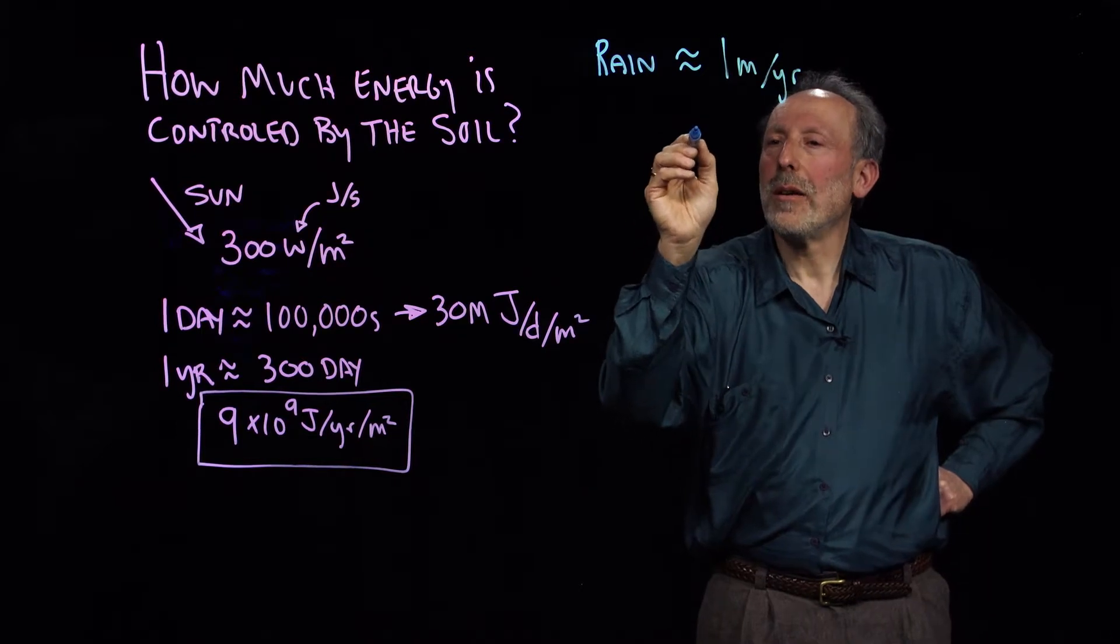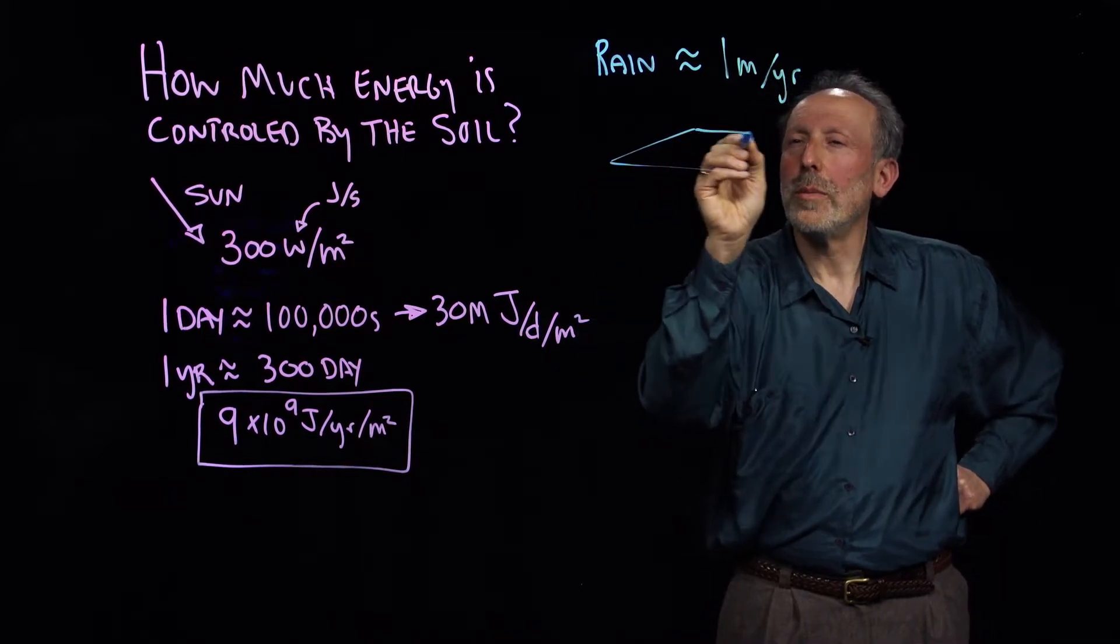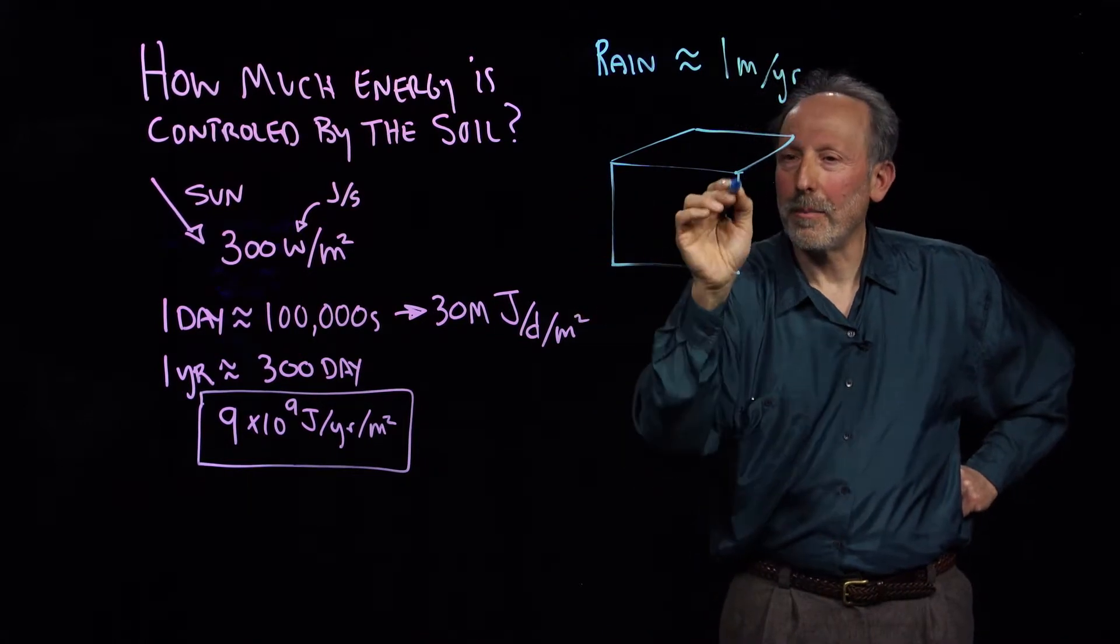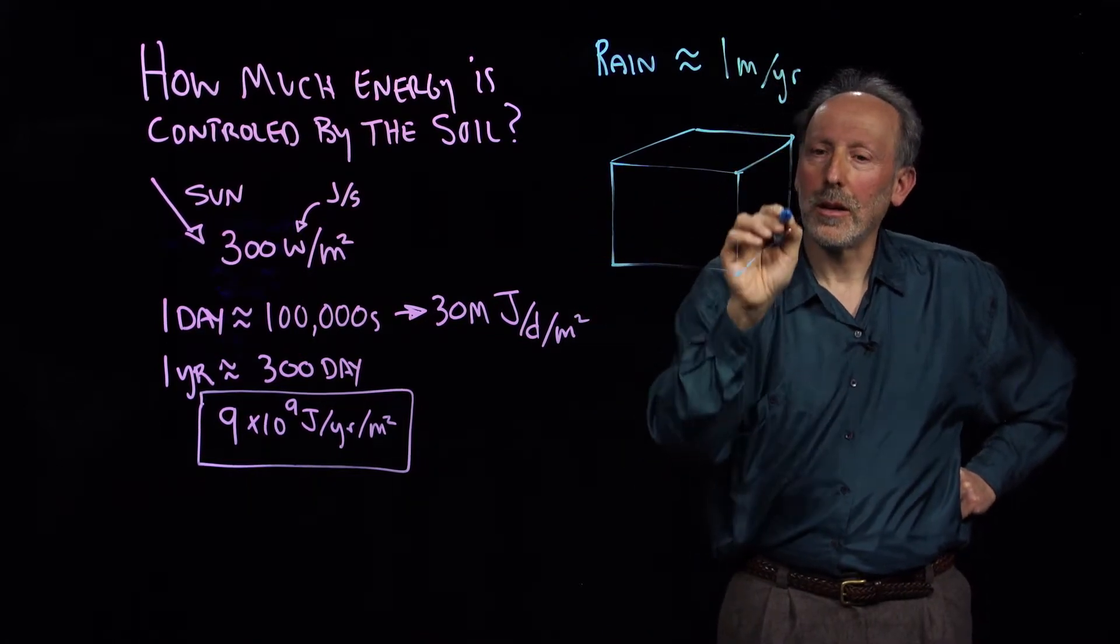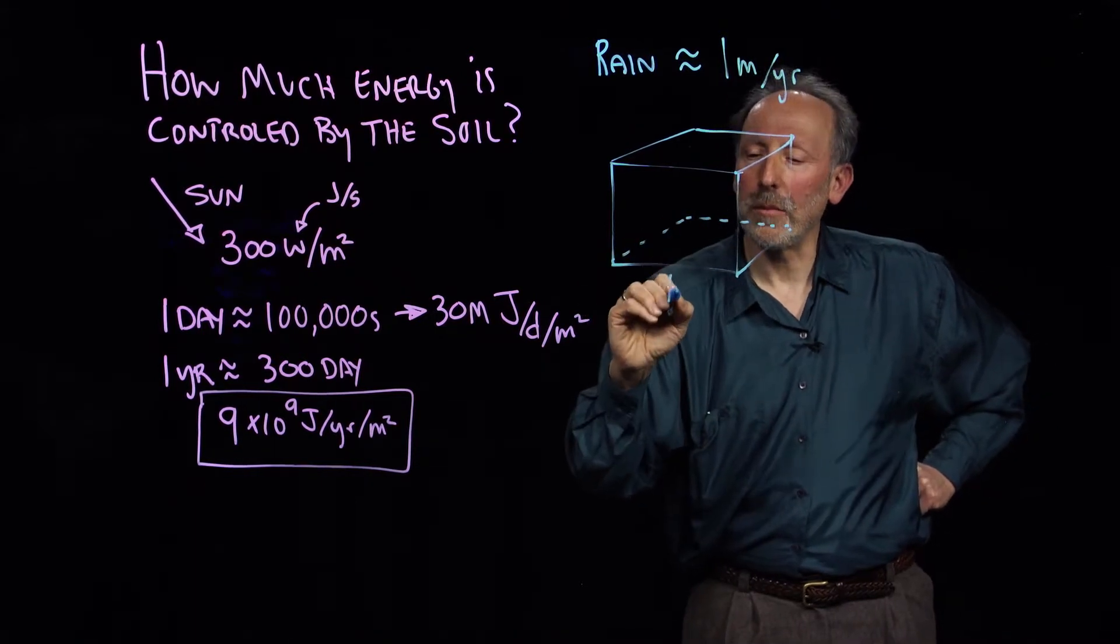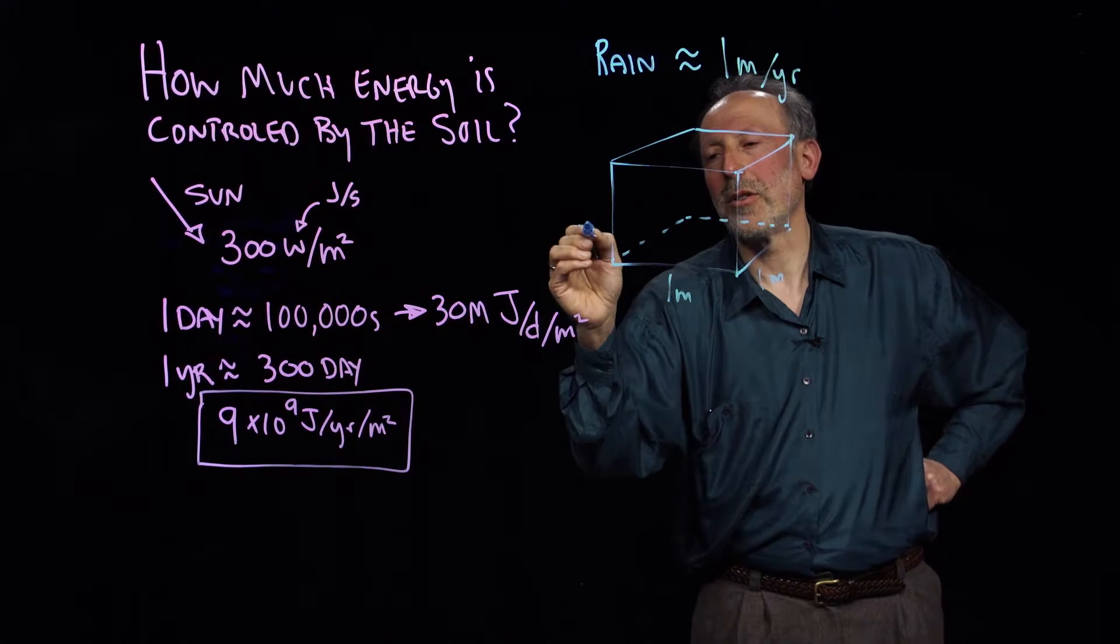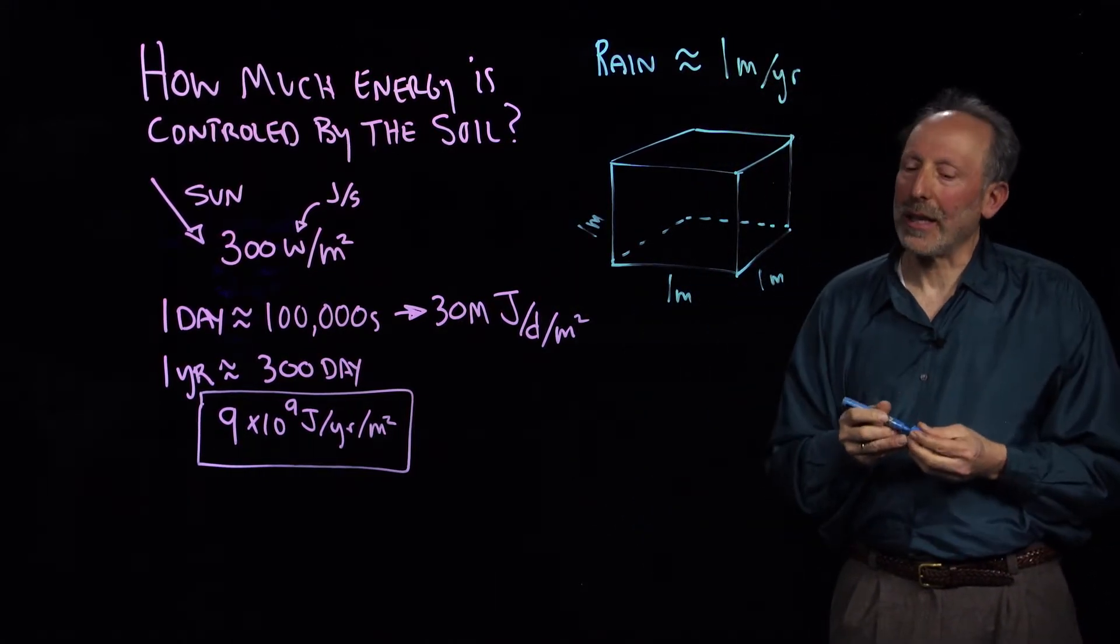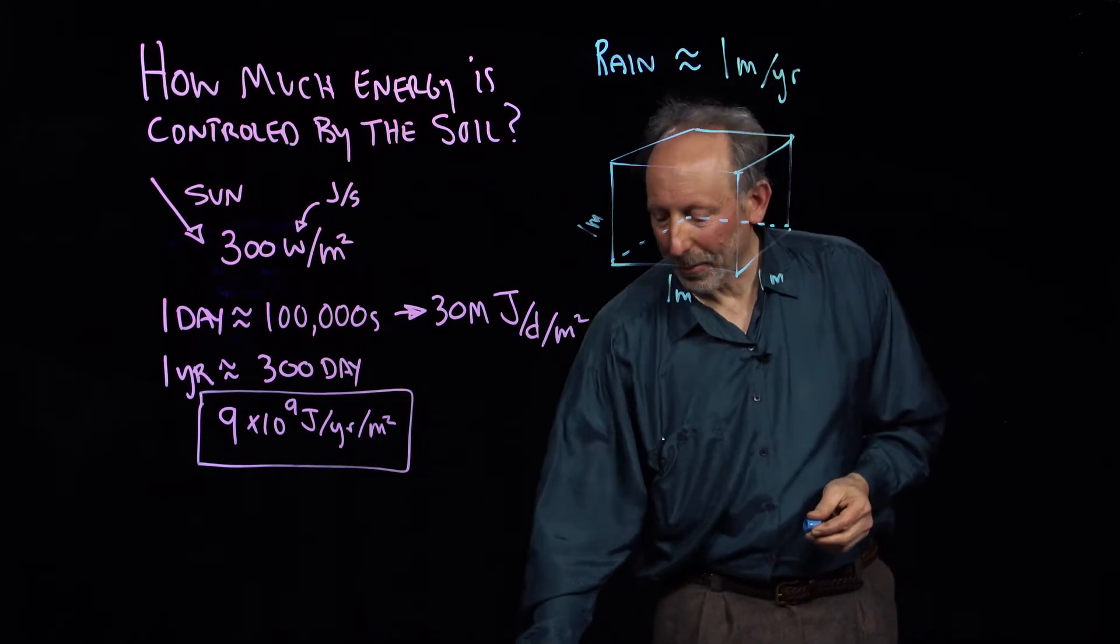Now, how much energy would be required to evaporate that cubic meter of water per square meter? So this is one meter by one meter, and it's one meter tall. How much energy are we going to require to evaporate that?